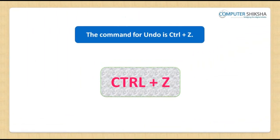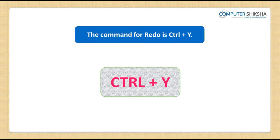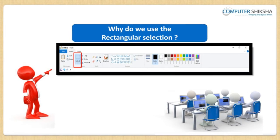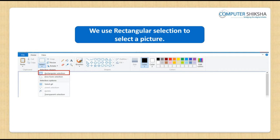The command for undo is Ctrl+Z and that for redo is Ctrl+Y. Why do we use rectangular selection? We use rectangular selection to select a picture because to select a picture, we need to have a rectangular box surrounding the picture.